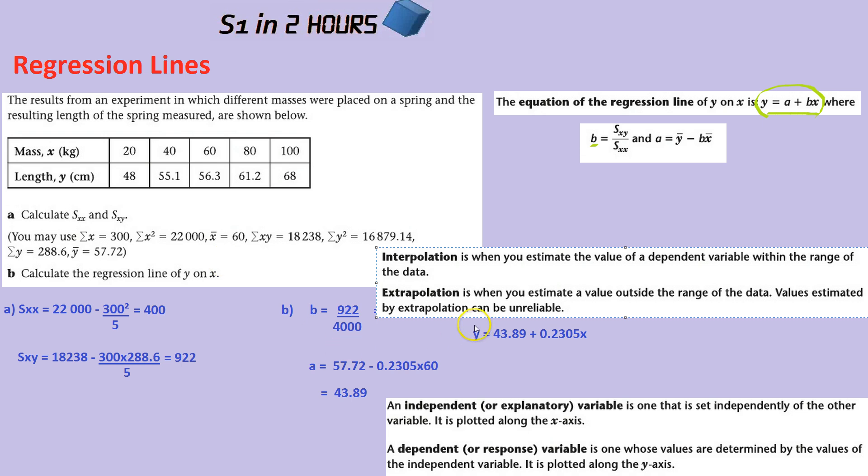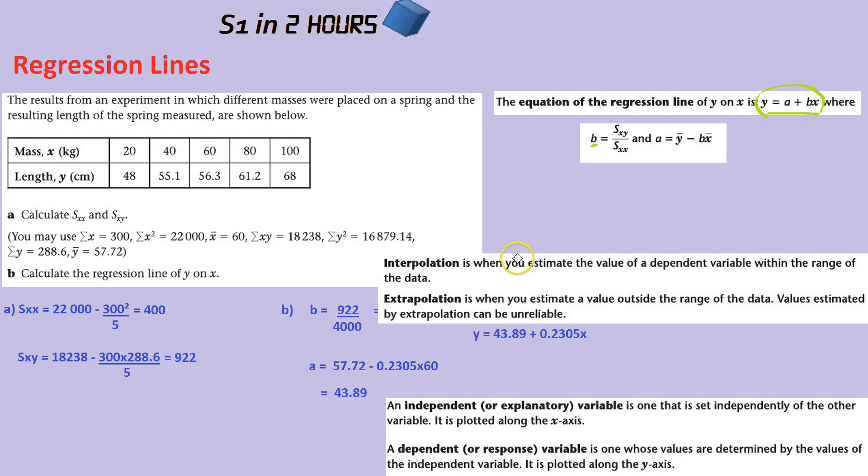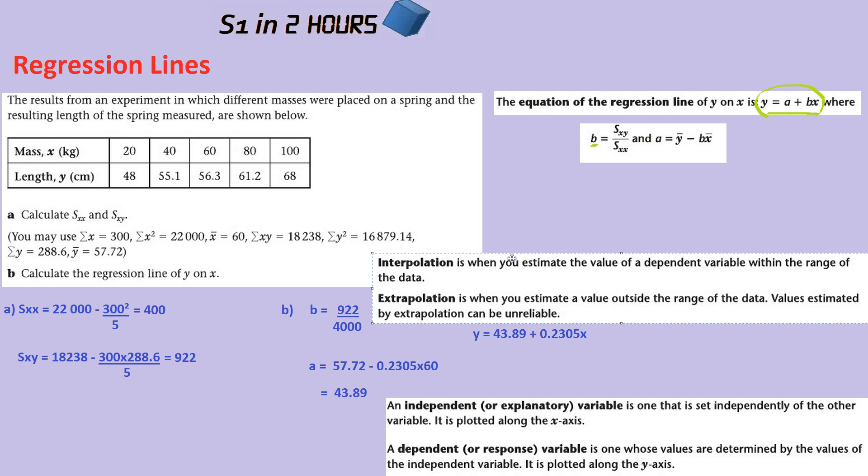So you shouldn't extrapolate, or at least it's way less reliable to extrapolate data. So that's when you estimate a value outside the range of the data, and the values estimated can be unreliable. And that's a life lesson as well, the fact that just because a certain amount of data is showing you one thing doesn't mean you can extrapolate all the way out and draw all sorts of crazy conclusions.